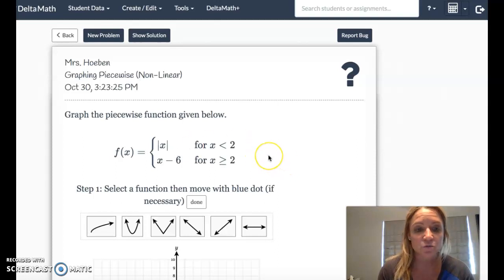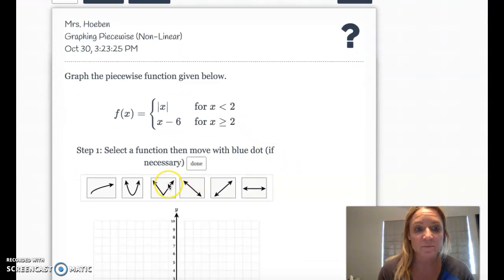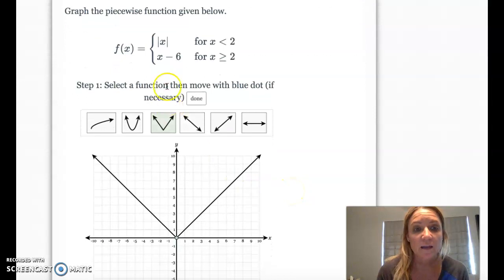So let's do the absolute value one. We're going to click on this guy. There it goes. And we need it to be less than 2. So we want from negative infinity all the way up to 2. So it would go right here.